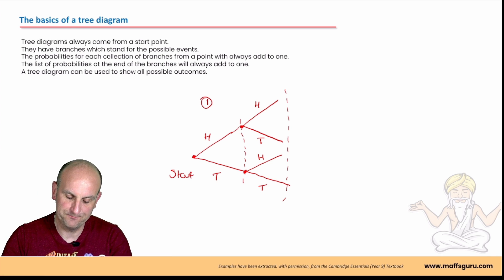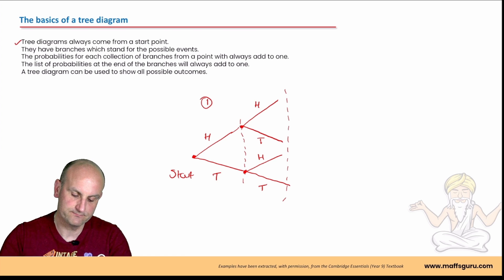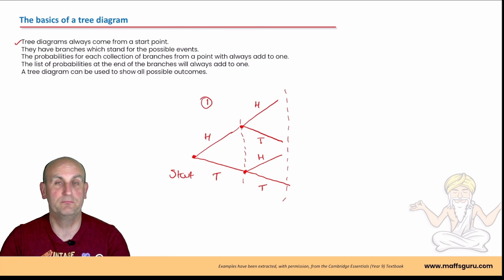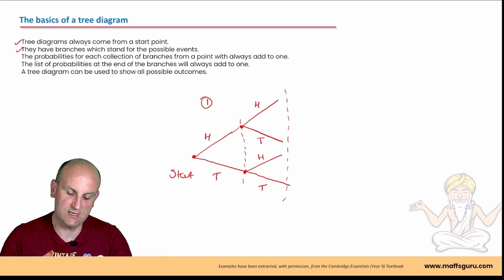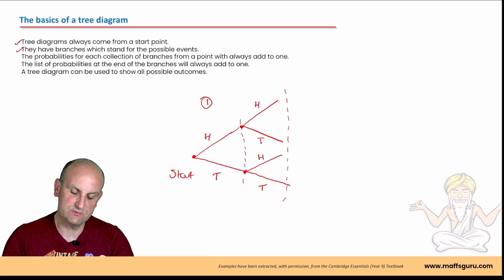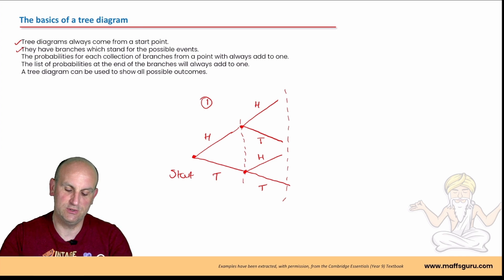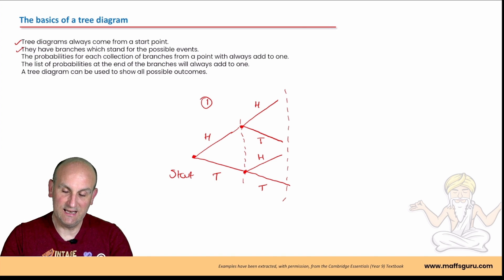Tree diagrams always come from a start point. They have branches which stand for the possible events — head and tail for a coin. The probabilities for each collection of branches from a point will always add to one. The list of probabilities at the end of the branches will always add to one. A tree diagram can be used to show all possible outcomes.